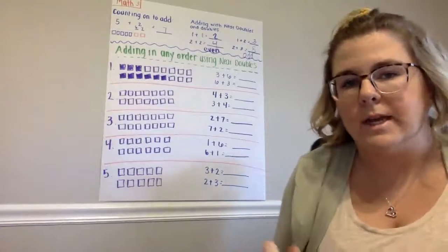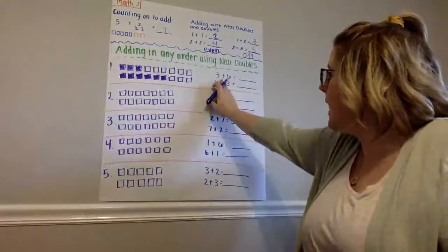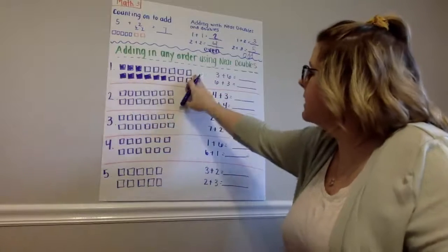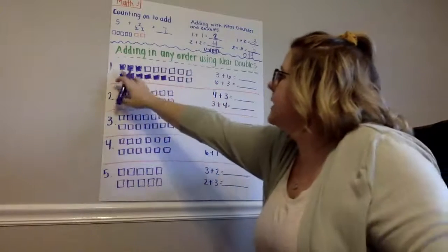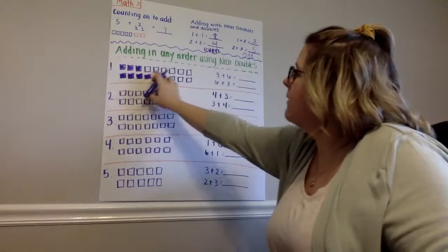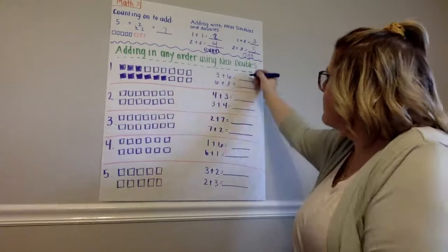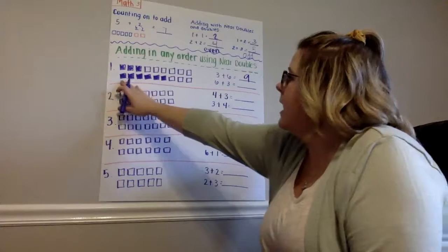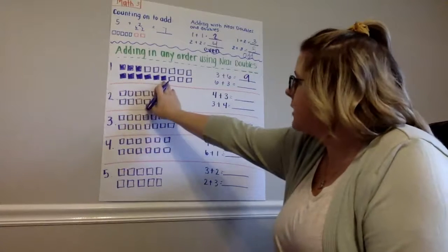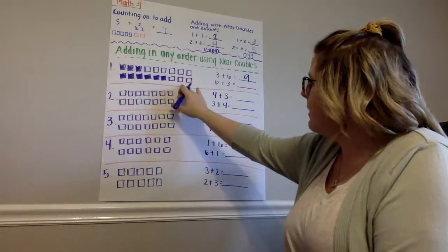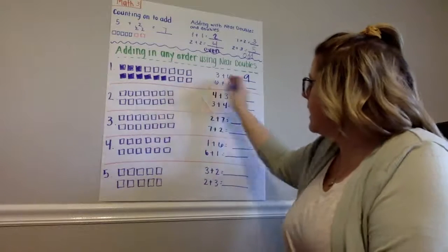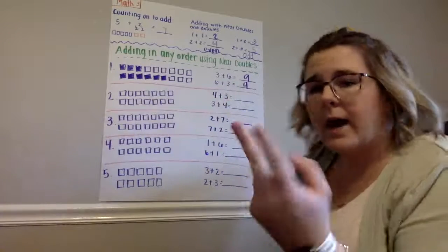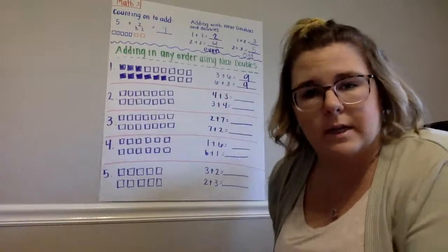So, let's practice these problems together. As you can see, I have colored in 3 blocks. And then we have 6 left. So, 3 plus 6, 1, 2, 3, 4, 5, 6, 7, 8, 9. 3 plus 6 equals 9. This way, I have colored in 6 cubes and left 3 blanks. But 6 plus 3 equals 9. You can add it in any way and you'll still get the same product.